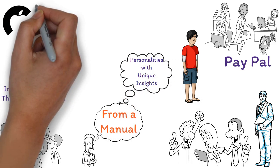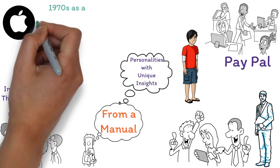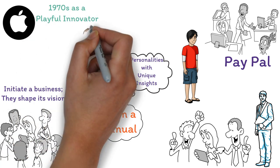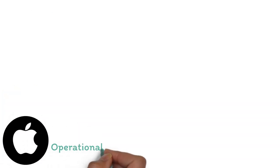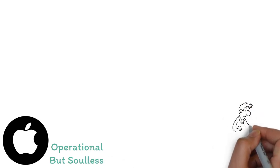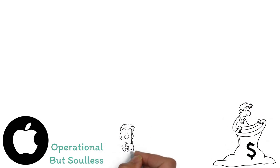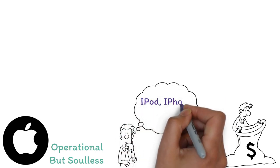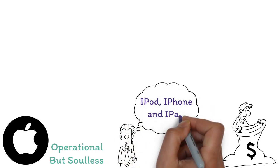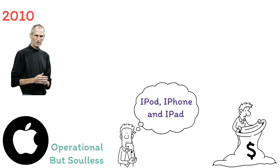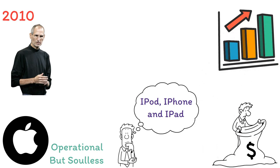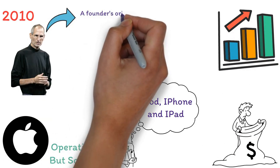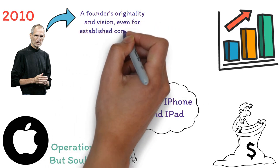Reflect on Apple's journey. Born in the 1970s as a playful innovator, Apple's growth led to an influx of managers, eventually sidelining visionary founder Steve Jobs. The company remained operational, but soulless. Upon Jobs' return in 1997, facing near bankruptcy, his groundbreaking vision paved the way for iconic products like the iPod, iPhone, and iPad. By 2010, under Jobs' strategic vision, Apple emerged as the world's most valuable entity. This trajectory underscores the invaluable role of a founder's originality and vision, even for established companies.